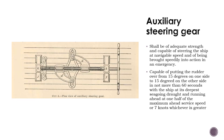The auxiliary steering gear is the equipment other than any part of the main steering gear necessary to steer the ship in the event of failure of the main steering gear, but not including the tiller, quadrant, or components serving the same purpose. The auxiliary steering gear shall be of adequate strength and capable of steering the ship at navigable speed and of being brought speedily into action in an emergency.